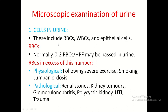Cells in urine include red blood cells, WBCs or leukocytes, and epithelial cells. Normally 0–2 red blood cells per high-power field may be present. If in excess, physiological causes include severe exercise and smoking. Pathological causes include renal stones, kidney tumours, glomerulonephritis, polycystic kidney, urinary tract infections, and trauma.